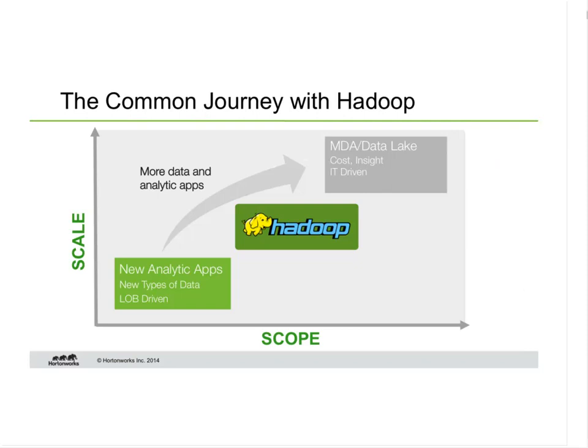Let's talk about how companies get to a modern data architecture and the journey organizations go through with Hadoop. It starts fairly simply — small in scale and scope. Most organizations we work with are looking to build a new kind of analytic application they couldn't build before, often driven by a line of business like marketing, customer service, or financial services. They typically start fairly small in scale and scope.